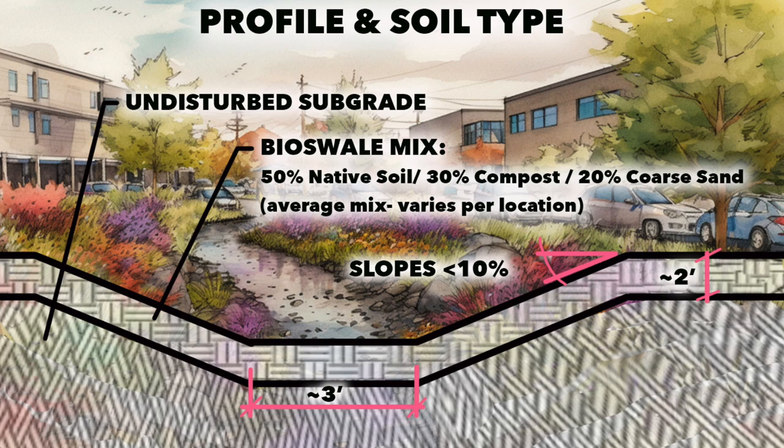You can also apply this to a rain garden, but you typically want it to have an undisturbed subgrade. Above that, somewhere between 18 inches and 2 feet, you want to have this improved bioswale mix — it will change depending on where you live in the state of Florida. An average bioswale mix would be 50% native soil, 30% compost, and 20% coarse sand.